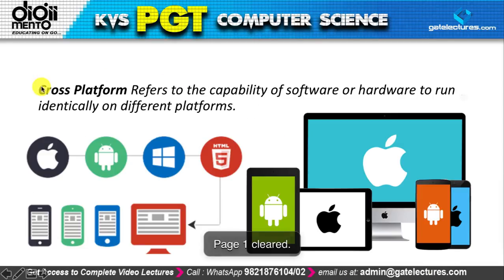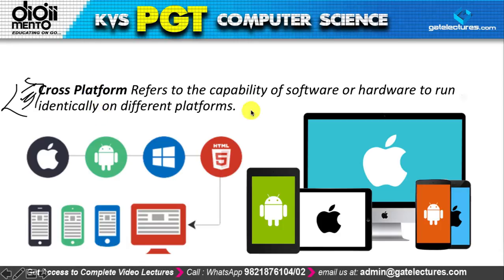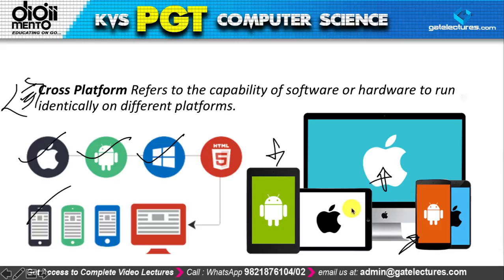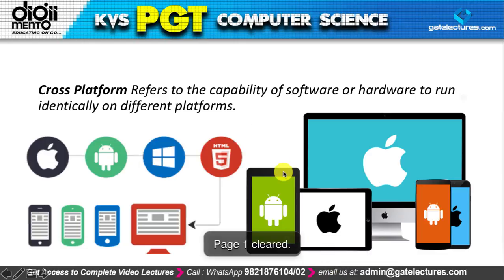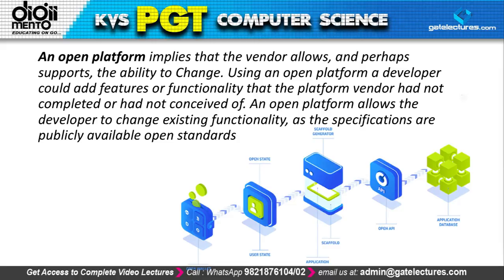JavaScript is both open and cross-platform. Cross-platform means the software can run on different hardware and platforms — Apple, Android, Windows, tablets, mobiles, computers, or laptops. Open platform does not mean open source — it means all documentation is openly available and people can add their own functionalities and features to make it more powerful according to their requirements.